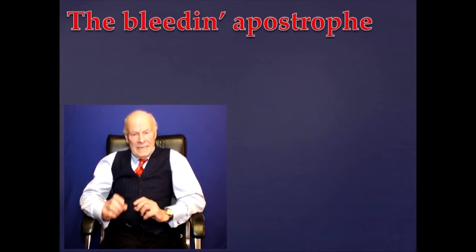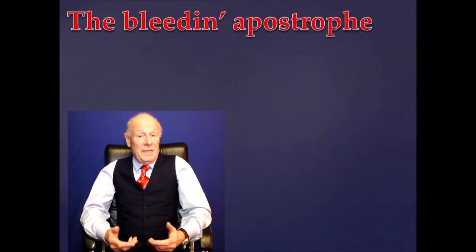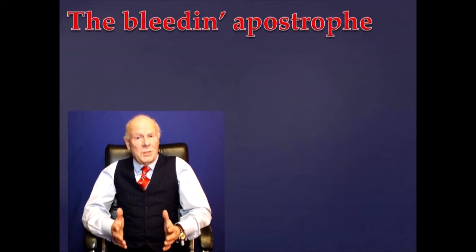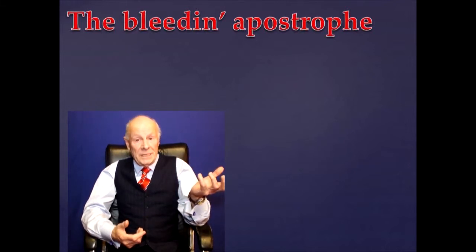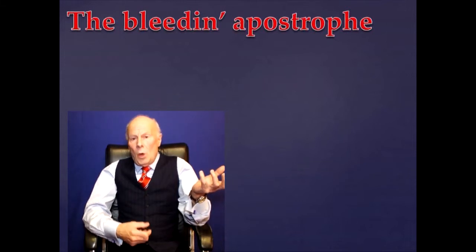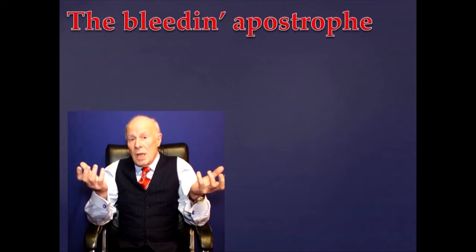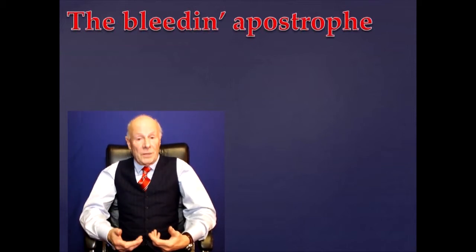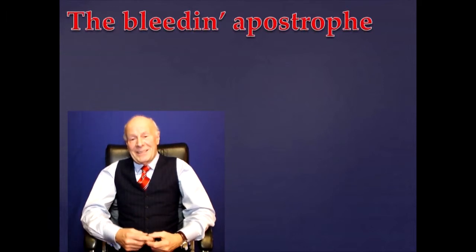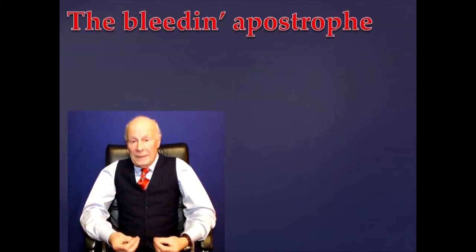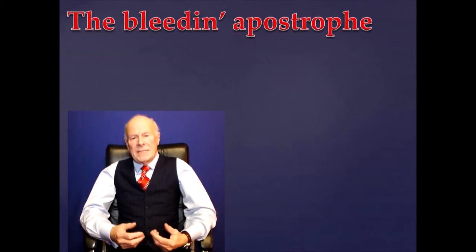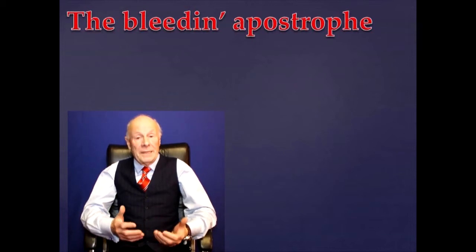We're now going to move on to the area which is a little more taxing, and that is denoting ownership. We've already said that you never ever use the apostrophe to denote plurality. You use it for one of only two things: either to show that you've abbreviated a word by dropping characters, or to denote ownership. In English we use the apostrophe either side of the letter S to show that a person or thing owns something. One complication in English, which isn't true of all languages, is that we also like to show how many people or things are doing the owning.